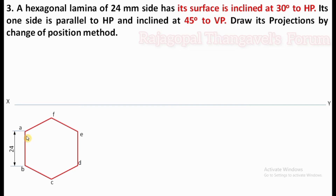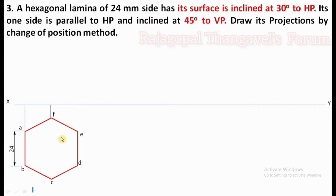Now after completing the top view as the hexagon, for obtaining the front view we can extend the projectors from all the corners of the hexagon. This is the first step top view. Extend the projectors from all the corners of the hexagon, then after extending the vertical projectors, complete the front view.